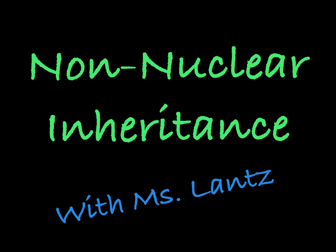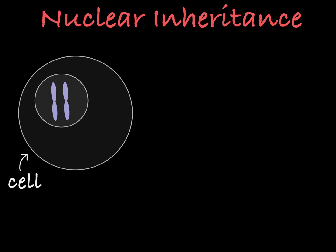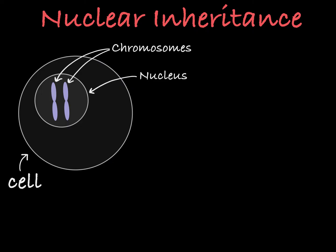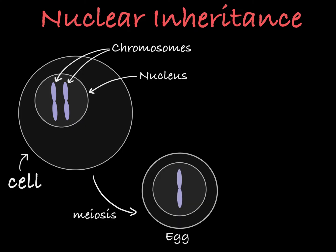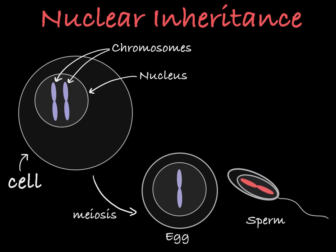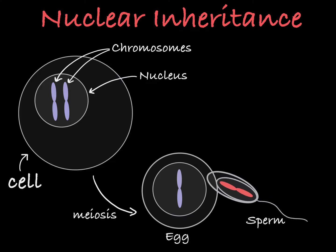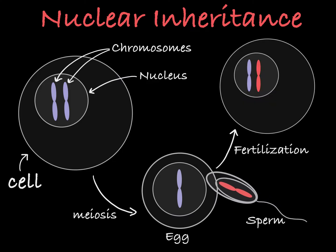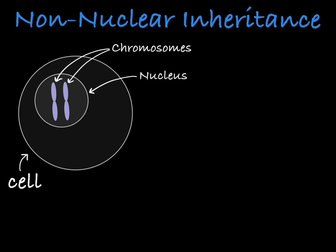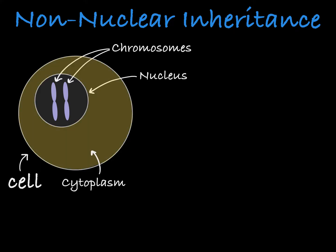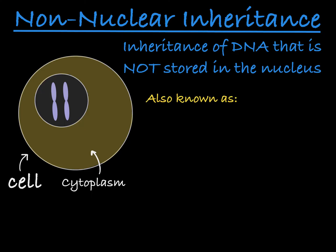In this video, we'll discuss non-nuclear inheritance. If you've been learning about human genetics and inheritance, you've likely been thinking in terms of genes that are located on chromosomes that are housed in the nucleus, where parents create gametes — sperm and eggs — each containing half of the parent genome, and when fertilization happens, the new organism has a complete genome, half from the female parent and half from the male parent. Today we're going to talk about a different type of inheritance that happens with DNA that is not located in the nucleus. This is sometimes called non-nuclear inheritance or extra-nuclear inheritance, meaning inheritance from outside the nucleus.